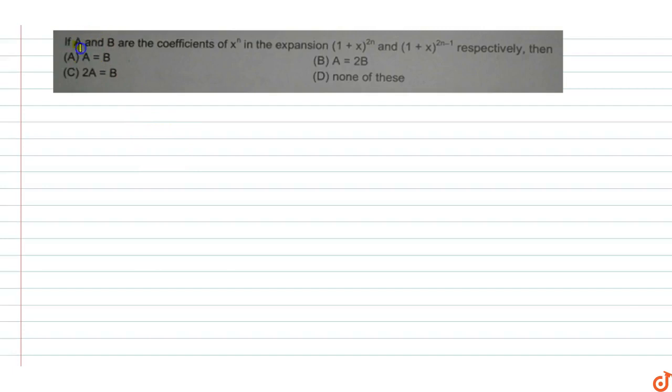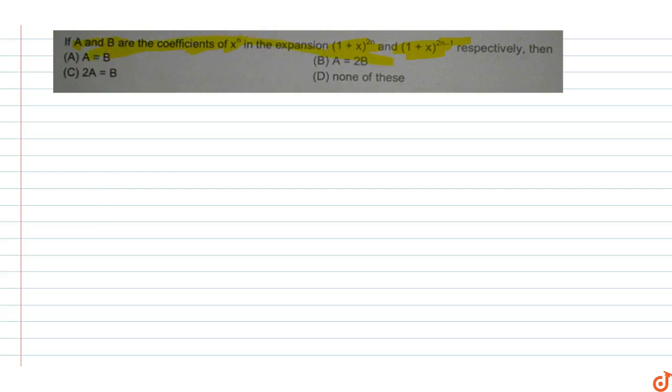This question asks: if a and b are the coefficients of x raised to power n in the expansion of (1+x)^(2n) and (1+x)^(2n-1) respectively, we have to find the relation between a and b. So a is the coefficient of x^n in the expansion of (1+x)^(2n).